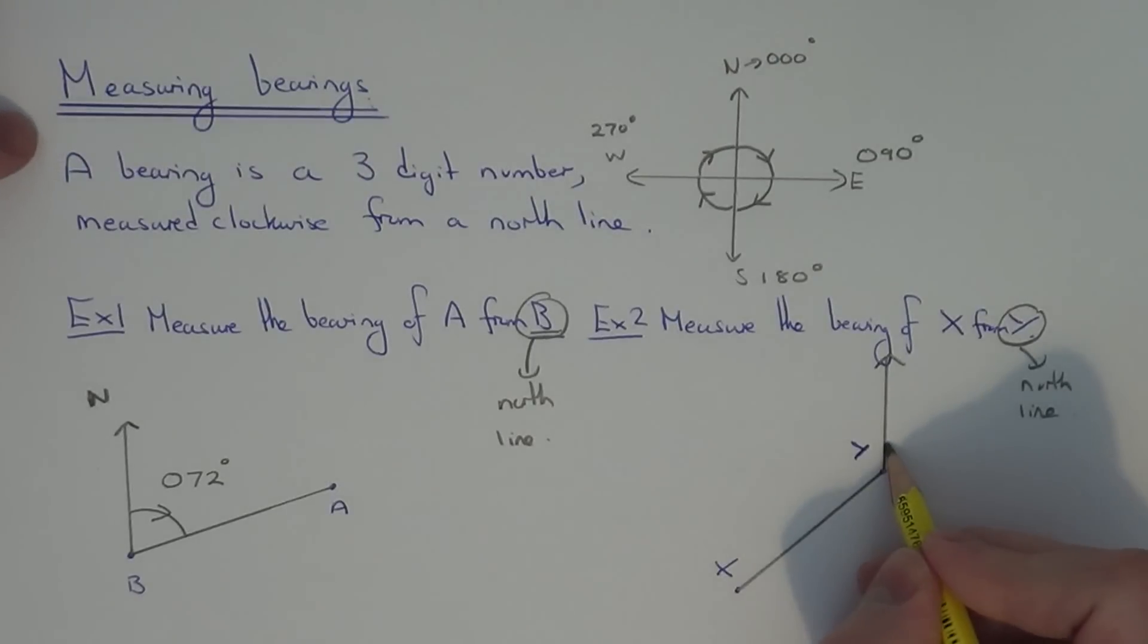Again marking the angle which we're going to measure. If we start on the north line and go clockwise. So this is the angle we need to find. We can see this is a reflex angle. It's going to be more than 180 degrees.